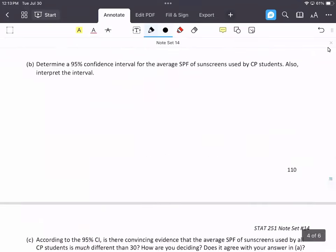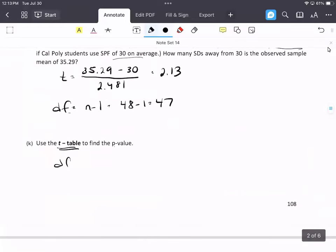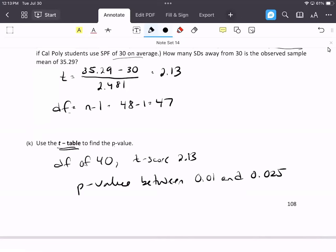To summarize, we use the degree of freedom of 40 on the table with the t-score of 2.13. It most likely will not fall exactly on one of the values in the table. The p-value is between 0.01 and 0.025. When you write these, go from low to high. The exact calculation from the applet was 0.0191.